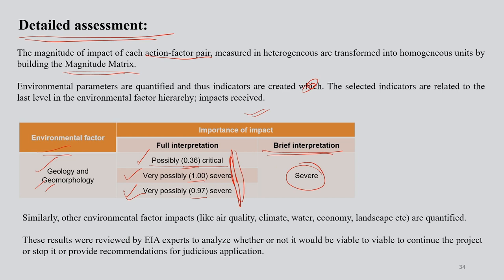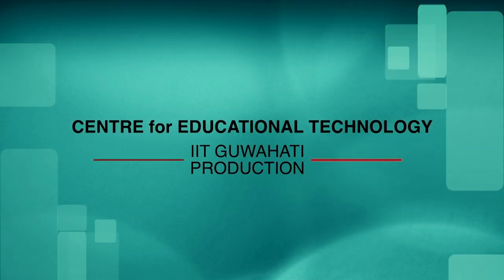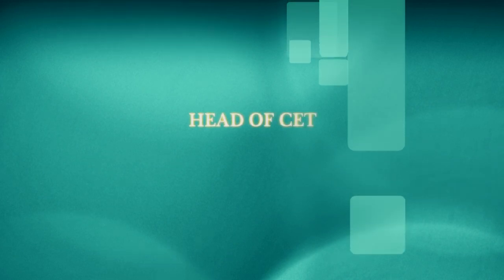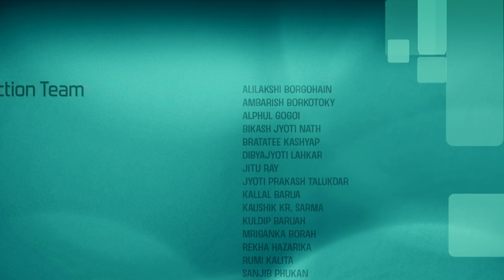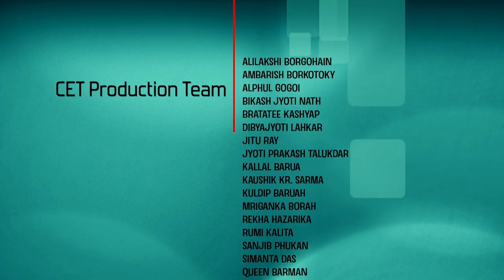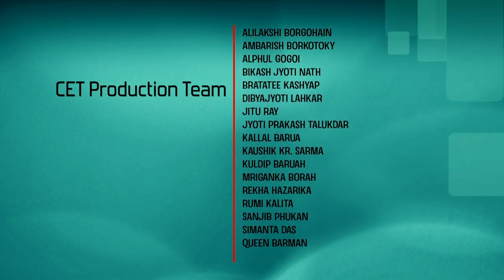Similarly, other environmental factor impacts like air quality, climate, water, etc. are quantified to understand impact on the surrounding system. These results are reviewed by EIA experts who analyze whether it would be viable to continue the project, stop it, or provide recommendations for modifications in process development methodologies to minimize environmental impact. That is the ultimate goal.